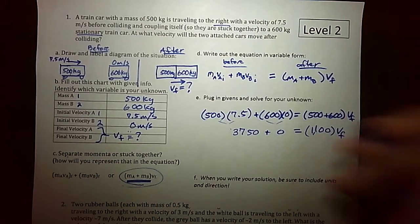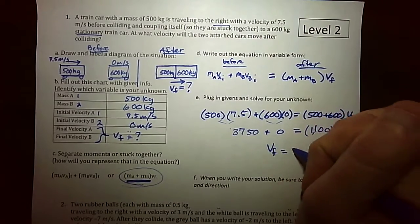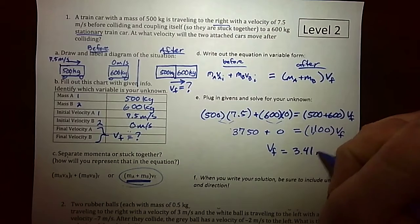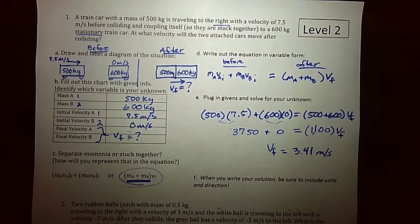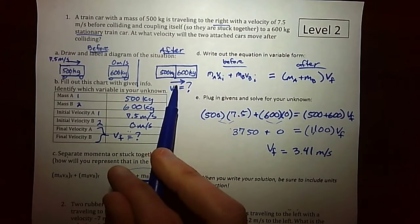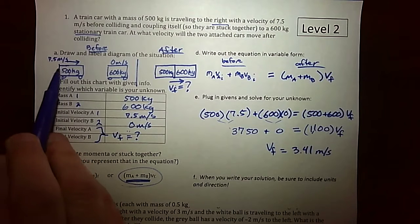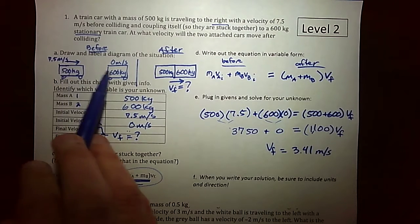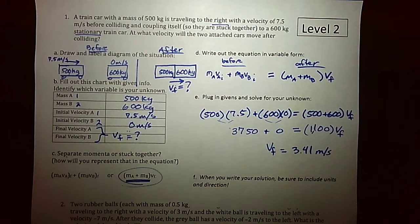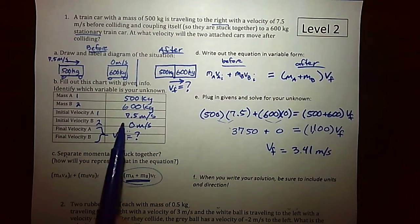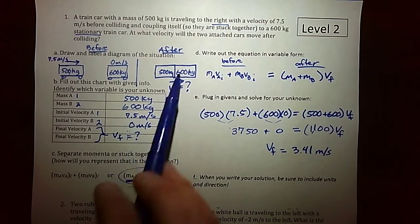And then when we do the math on this, we're going to get a final velocity of 3.41. And notice that it's positive in the calculator, which means that it's going to the right, which conceptually makes sense, right? This object, this cart runs into this one. It would make sense that they would also continue going to the right. At a slower velocity because there's just more mass here.